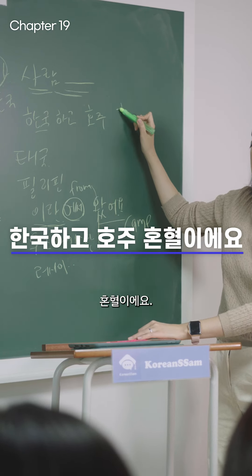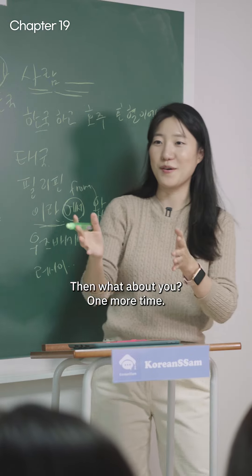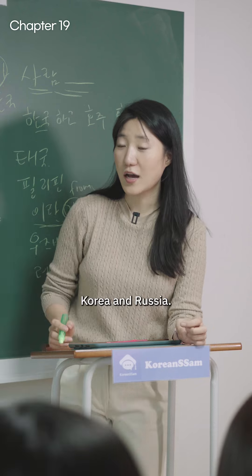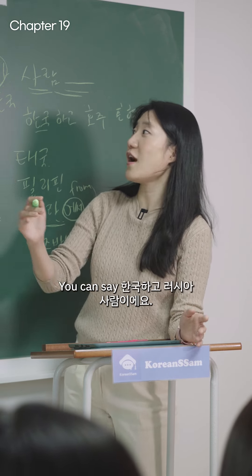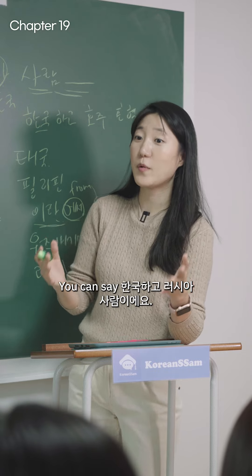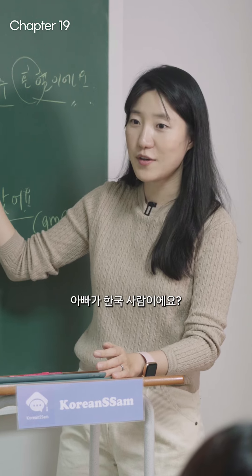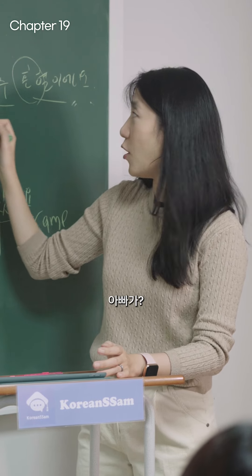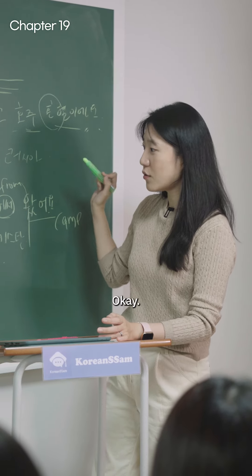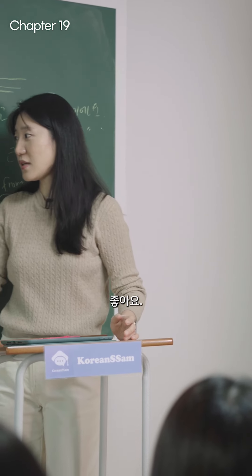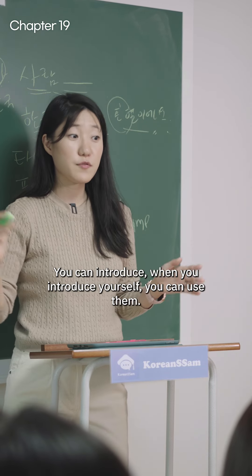What about you? You can say 한국하고 러시아 사람이에요, or 한국하고 러시아 혼혈이에요. You can also say it separately: 아빠가 한국 사람이에요, 엄마가 러시아 사람이에요. This is how you introduce your nationality when you introduce yourself.